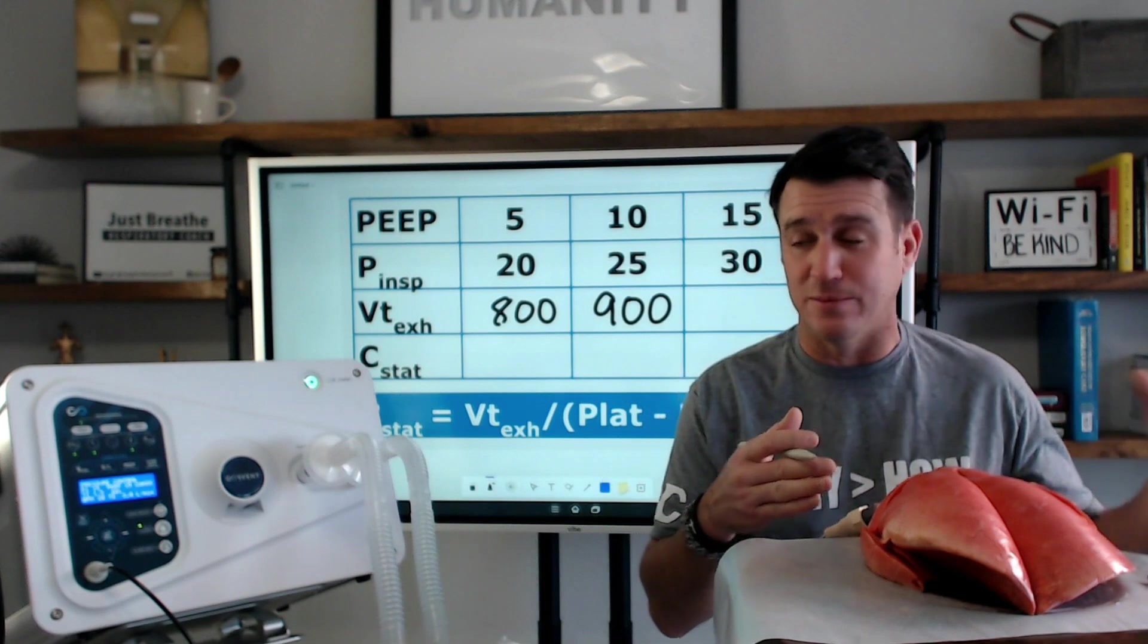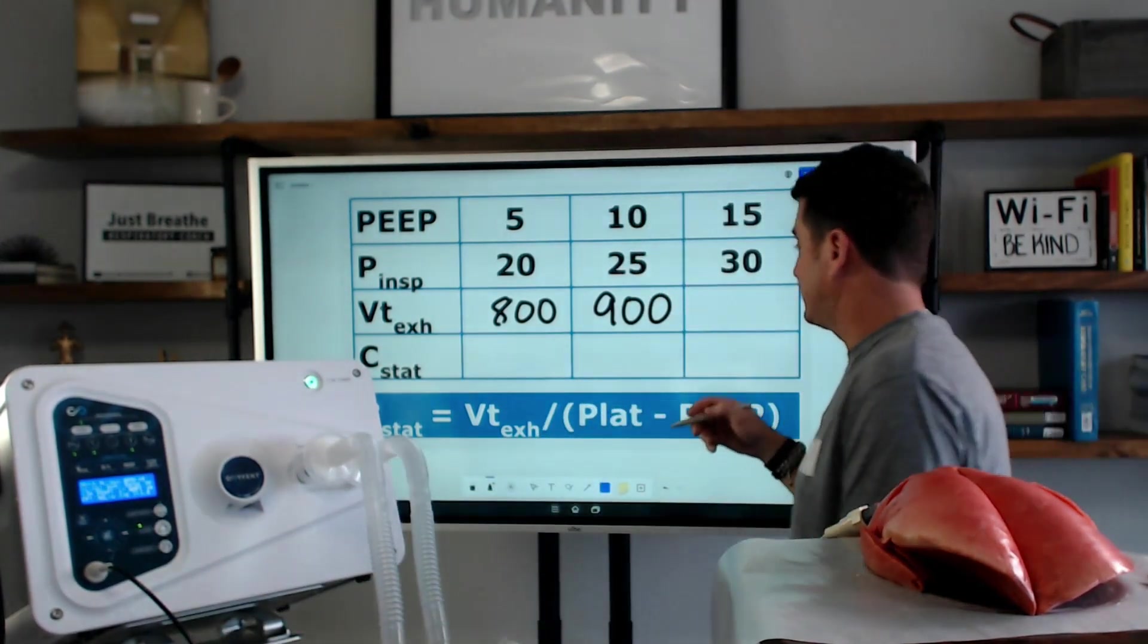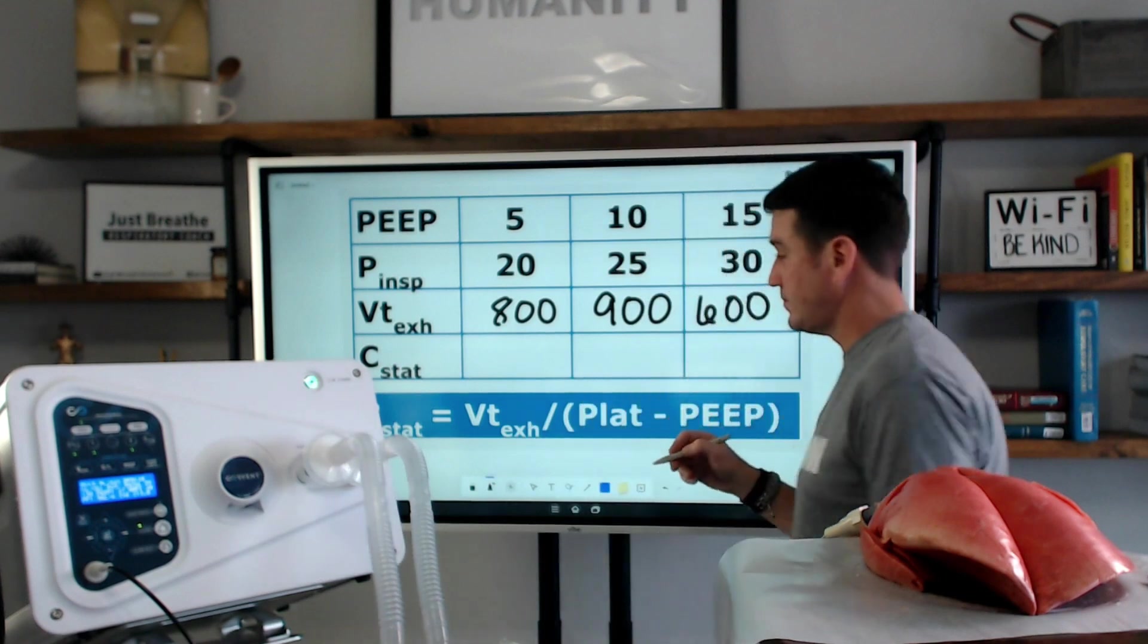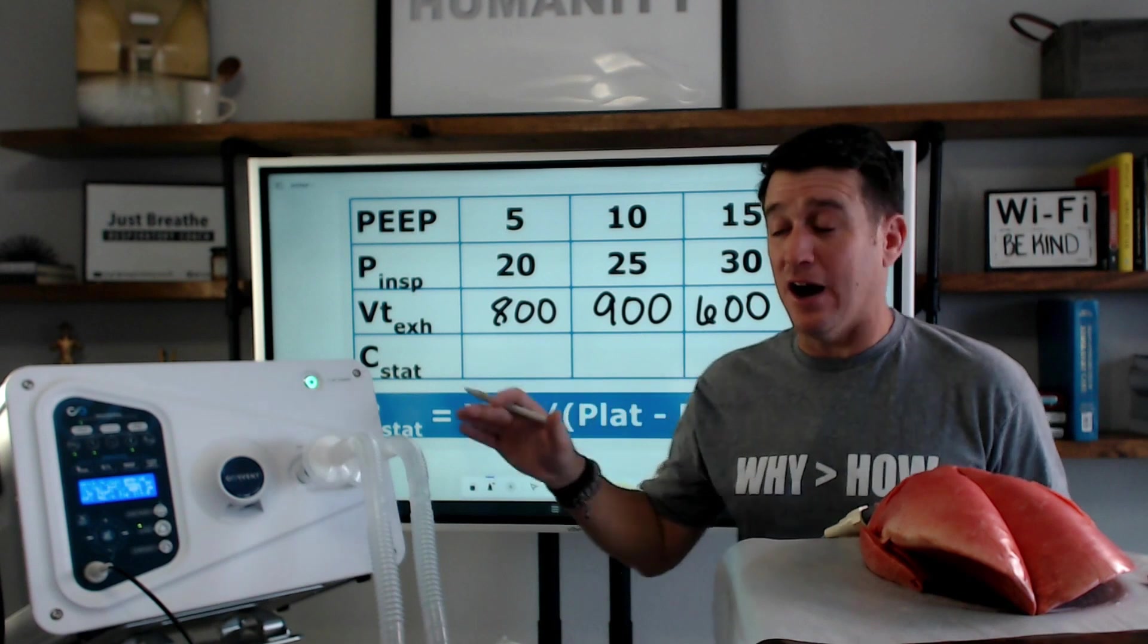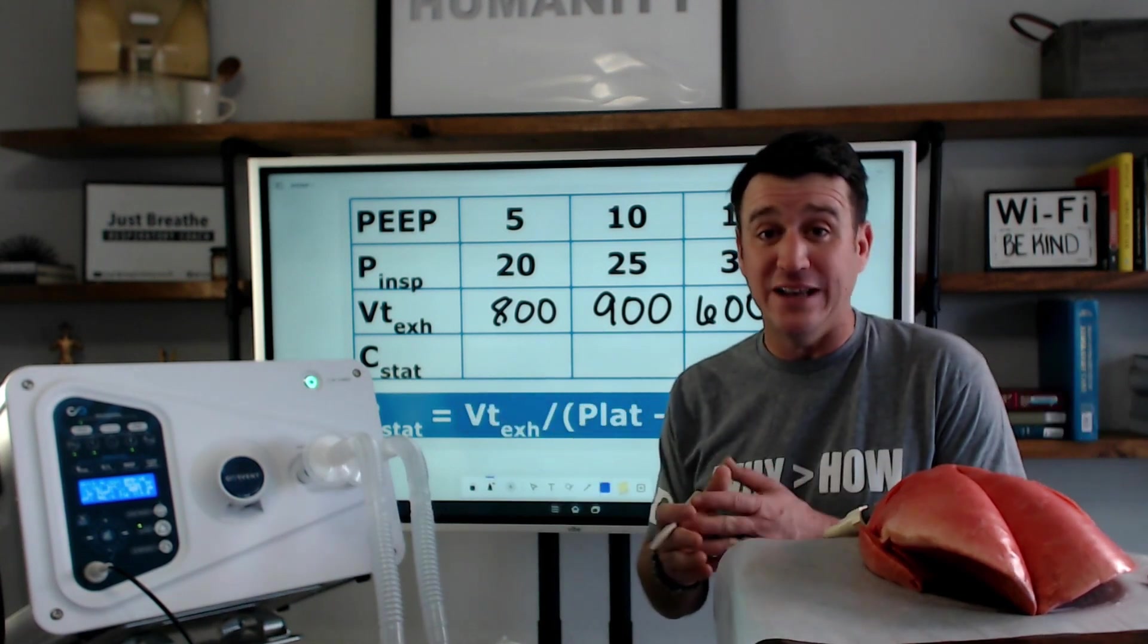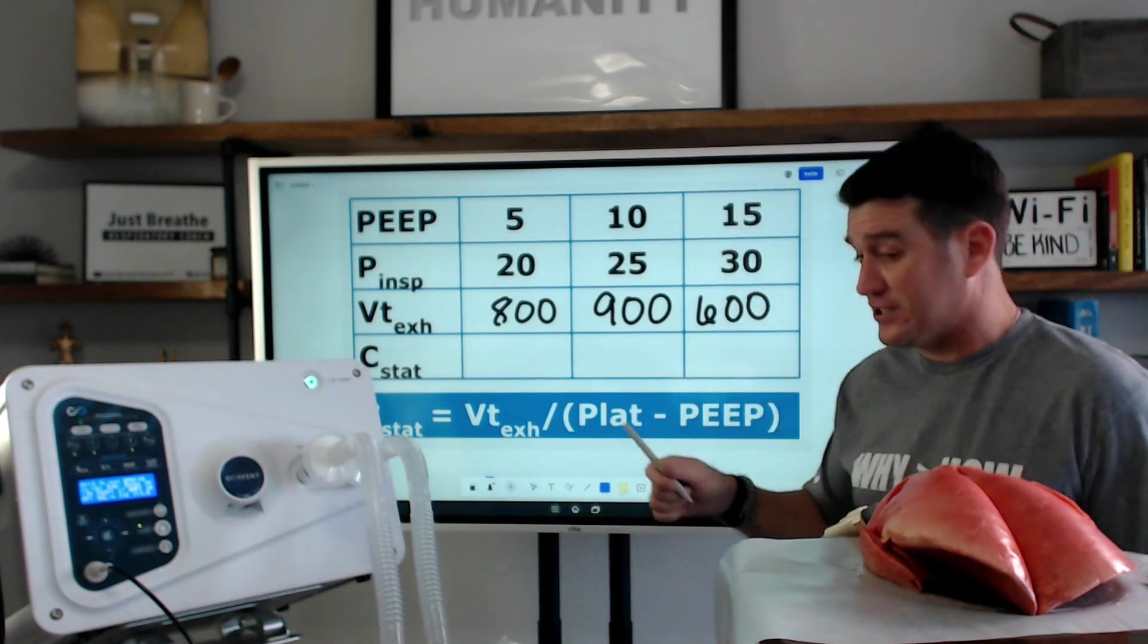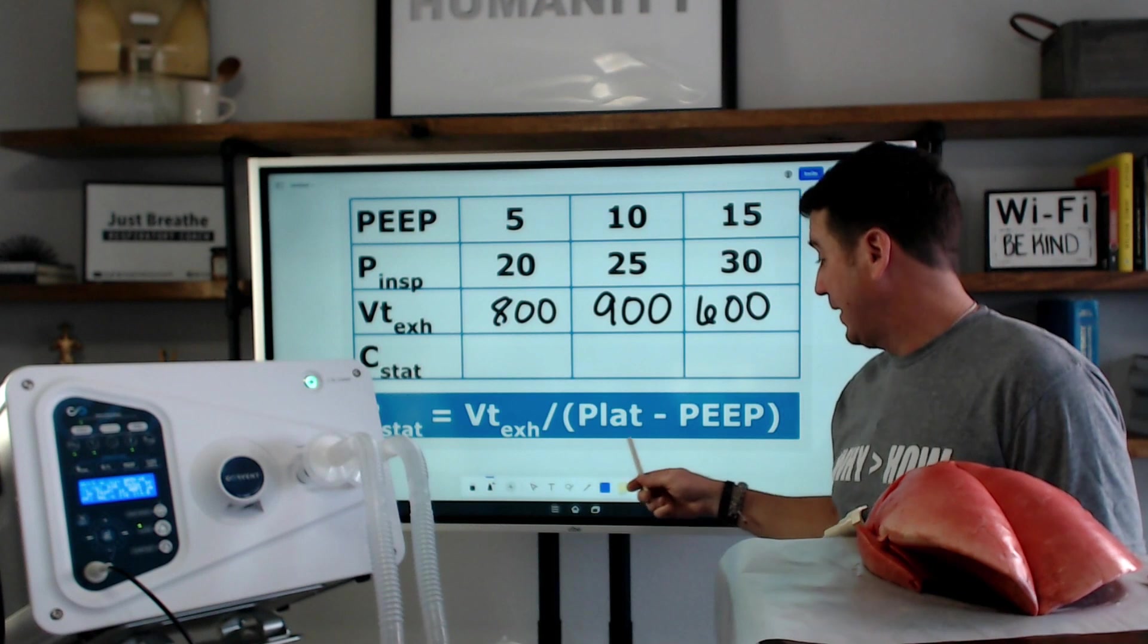Let's see what our exhale tidal volumes are now. We're getting exhale tidal volumes now of 600. So, what we need to do now is calculate our static compliances, and we'll figure out, based off of this, which is the best PEEP for these pig lungs right now.